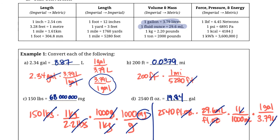Just so you know, there are actually 128 fluid ounces per gallon. So you could convert it directly by taking 2,540 ÷ 128, and you end up with the same number. Imperial units use these seemingly random numbers as opposed to the metric system, but that's just the way it is. In this course it will be useful to be able to work with both systems.